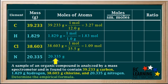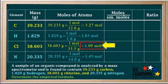And finally for nitrogen, we take the 20.335 grams, multiply by the conversion factor 1 mole per 14.0 grams, the atomic mass of nitrogen, and we get 1.45 moles of nitrogen atoms. Now carefully comparing the four values for the numbers of moles, we see that the smallest value is 1.09 moles. So in the next column, we'll divide each of the values for moles by 1.09.